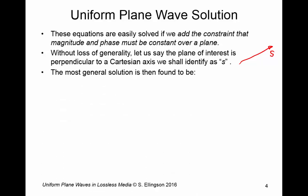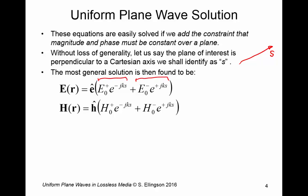The most general solution under this constraint that the magnitude and phase must be constant over a plane is this. Here is a solution for the electric field. Here is a solution for the magnetic field. In general what you see is the sum of two terms. So for example for the electric field we have this term here and this term here. The first term has a minus sign in the exponent and we know that that corresponds to waves traveling in the plus S direction. The second term has a plus sign in the exponent of the second term here and we know that corresponds to a wave traveling in the minus S direction.